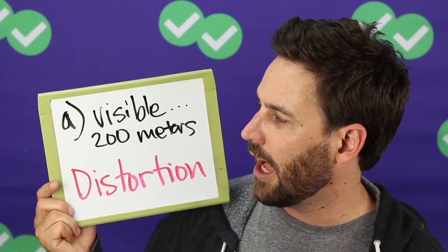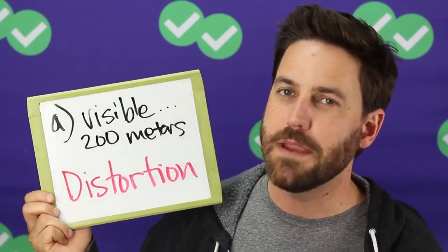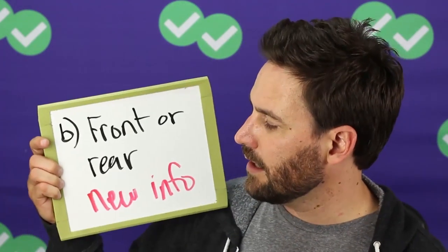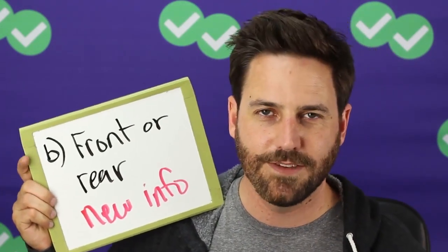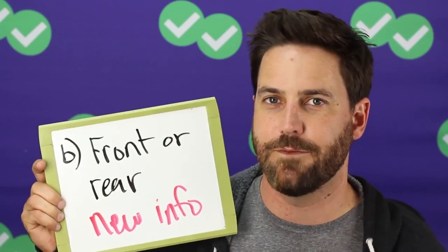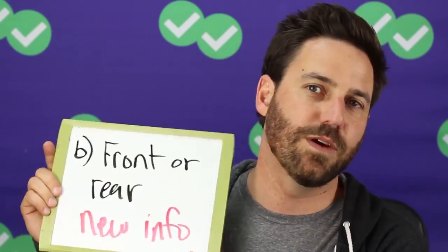Answer choice A talks about being visible at 200 meters. This is a perfect example of a distortion answer — this description is of theory A, not theory B. They want to make sure you're searching in the right part of the passage. Answer choice B talks about the fish being in the front or rear of the group. There's nothing in the passage about the placement of fish within the schooling group, so this is new information and wrong.